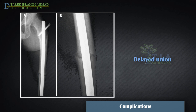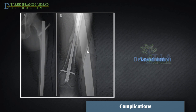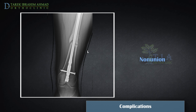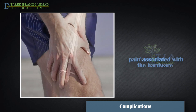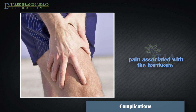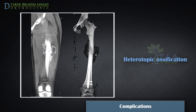Delayed union is defined as no sign of healing at three months. Nonunion is defined as no sign of healing at six months. The most important factors associated with the development of nonunion include damage to the local soft tissues, tobacco use, delayed weight bearing, patient non-compliance, and diabetes. Pain emanating from an orthopedic implant can be a difficult problem to identify; hardware removal is frequently performed with successful results but may not always lead to resolution of all symptoms. Heterotopic ossification is rarely clinically significant.